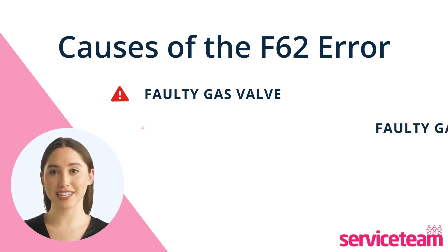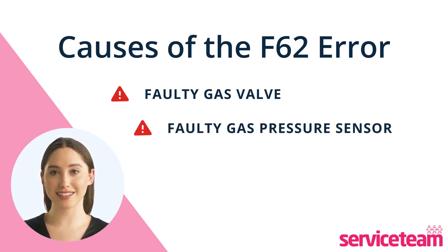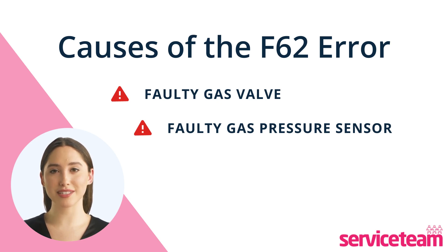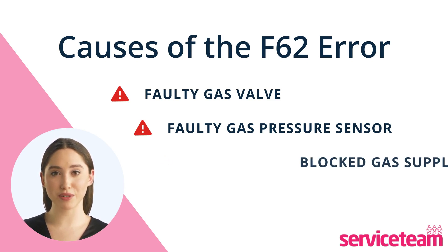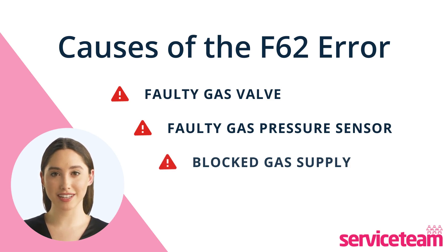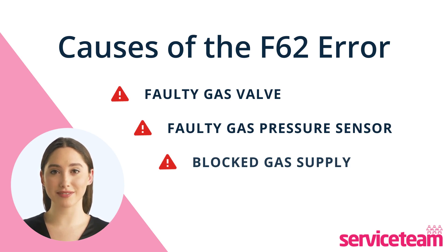Another cause could be a faulty gas pressure sensor. It acts as a safety monitor for gas pressure levels. If it malfunctions, it may send wrong signals to the boiler, causing it to shut down unexpectedly, resulting in heating or hot water supply issues. If the gas supply to your boiler is blocked or restricted due to debris in the gas line or a faulty gas meter, it can also trigger the Vaillant F62 error code.